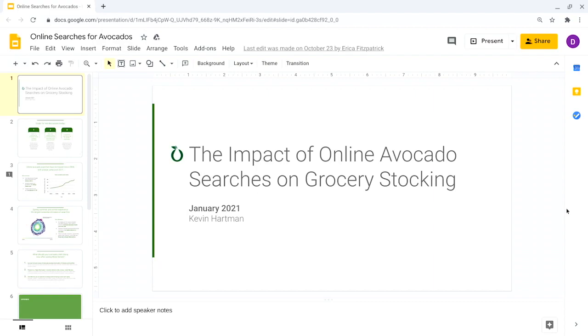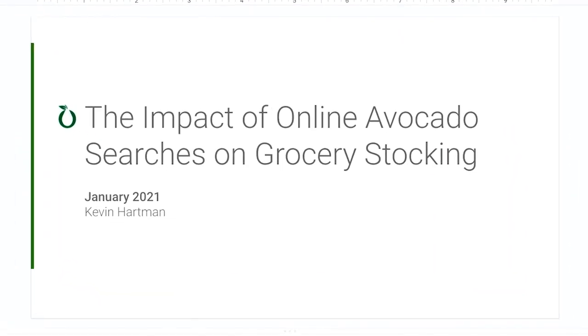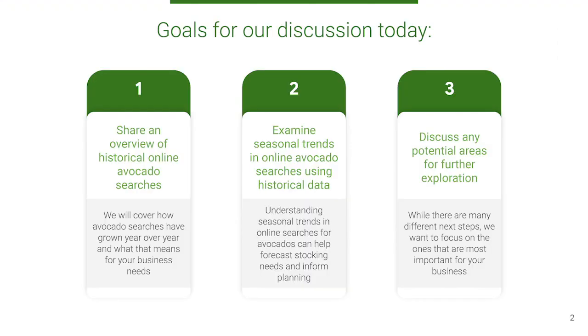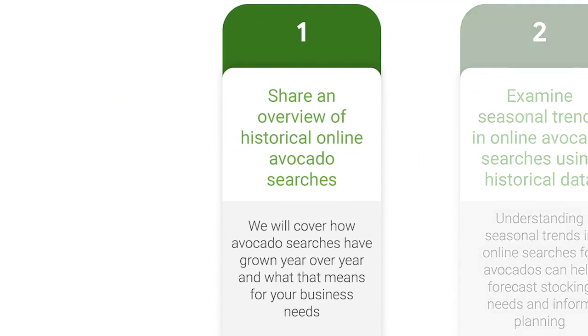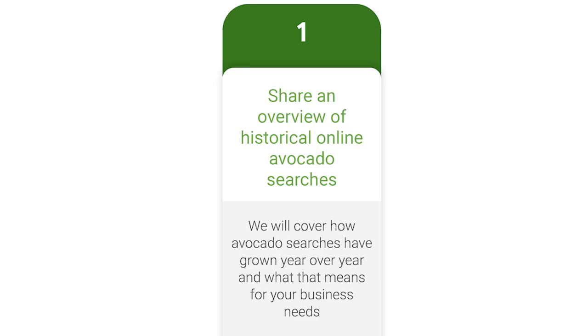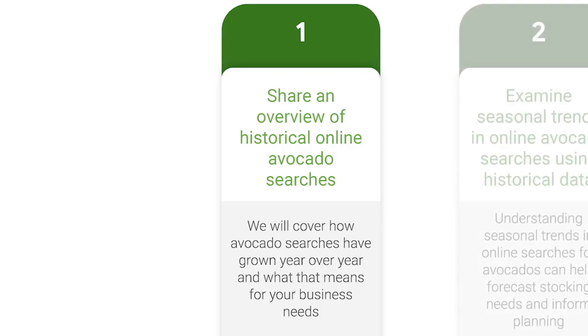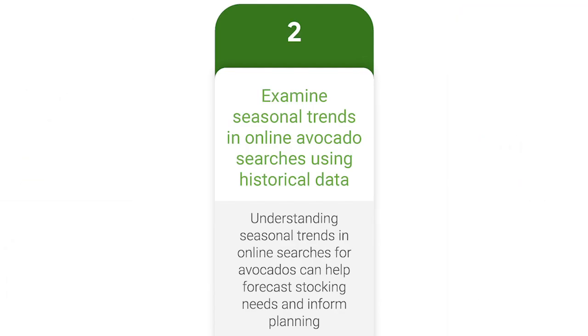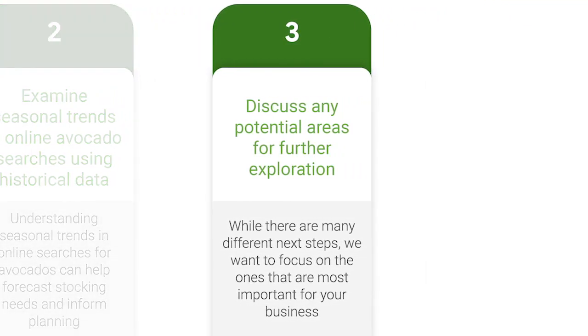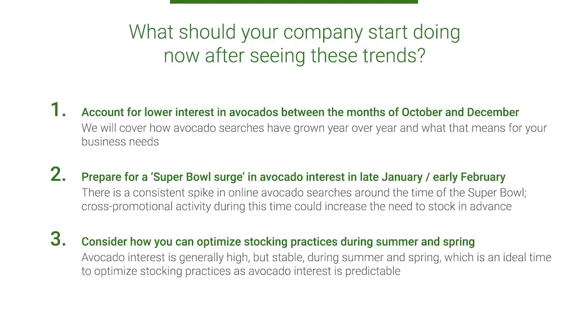Let's check out this example slide presentation. We can begin our presentation by framing it with the business task. In this second slide, I've added goals for the discussion. It starts with sharing an overview of historical online avocado searches, covering how avocado searches have grown year over year and what that means for your business. Then we'll examine seasonal trends in online avocado searches using historical data — understanding seasonal trends can help forecast stocking needs and inform planning. And finally, discuss any potential areas for further exploration, which is where we'll address next steps. This clearly outlines the presentation so our audience knows what to expect, and lets them know how the information we share is going to be connected to the business task.